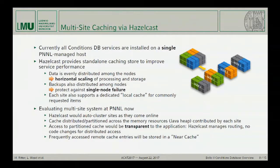This is now being evaluated at PNNL. The sites should auto-cluster as they come online, and the cached distributed partitions can be controlled across each site — each site can specify how much it will contribute and data will be auto-distributed in the cache. This should all be transparent to the application: Hazelcast manages the routing and no code changes in our REST API application are necessary. We will also have a near cache as already mentioned.